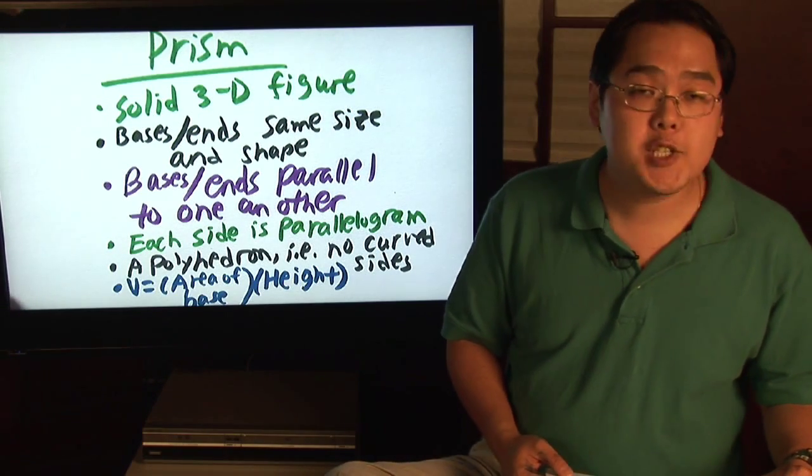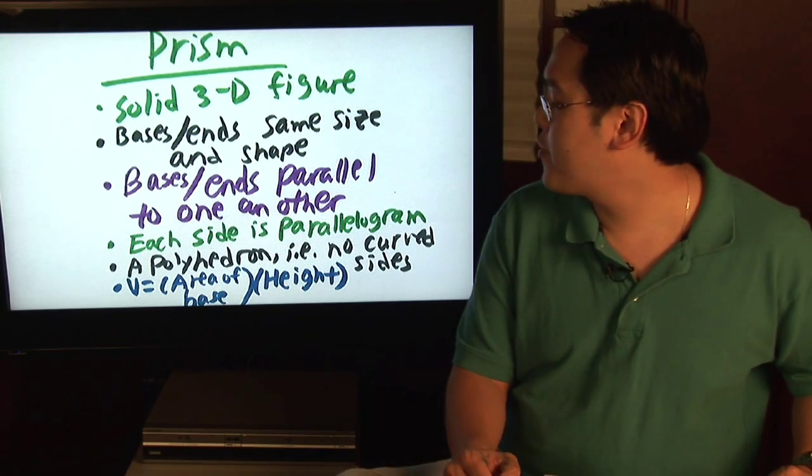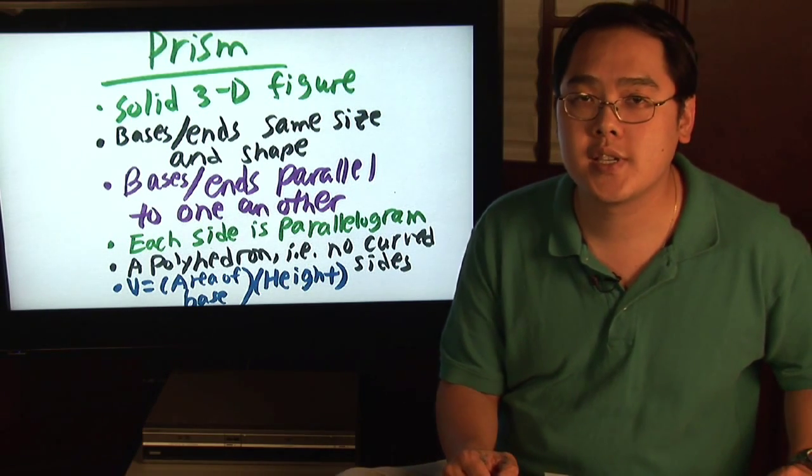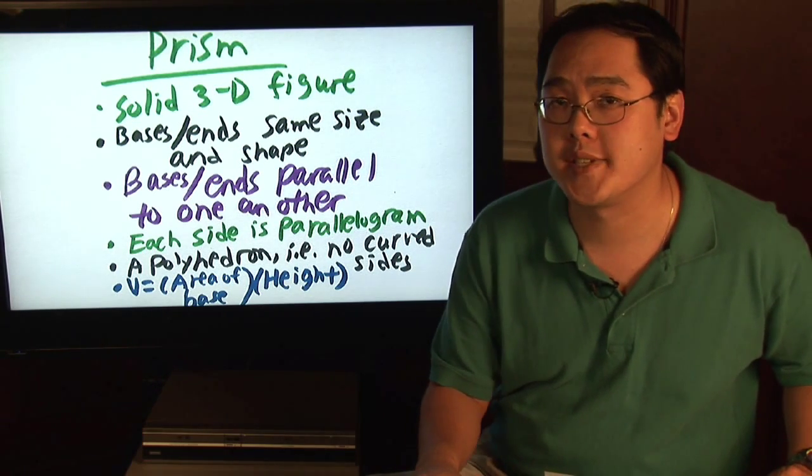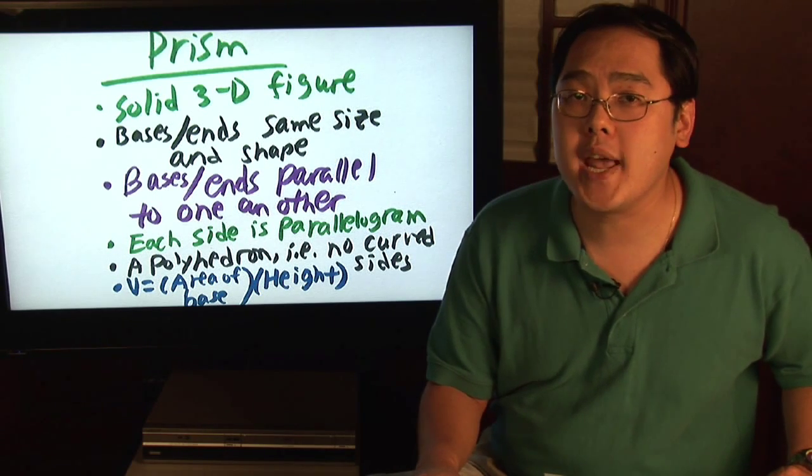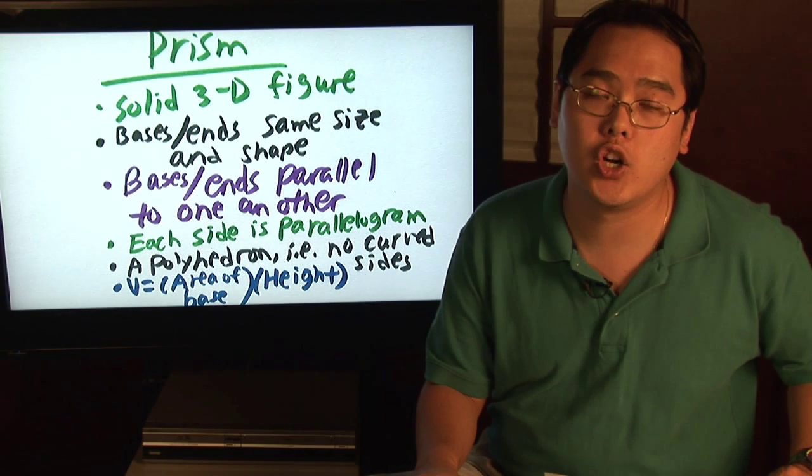And last but not least, because a prism is a three-dimensional figure we calculate volume. The volume of a prism is the area of the base times the height. So for example, if you have a rectangular prism otherwise known as a box, you find the area of the base which tends to be rectangle or square times how tall it is.